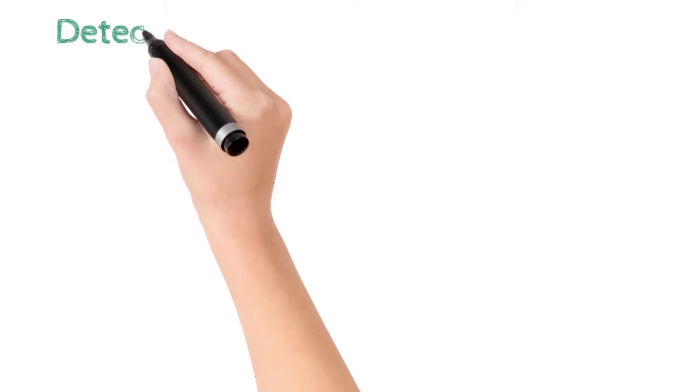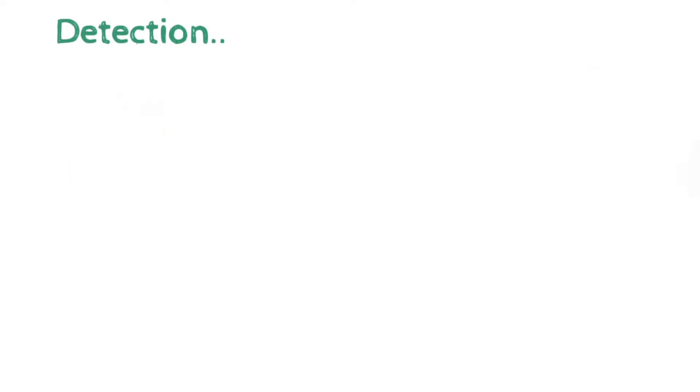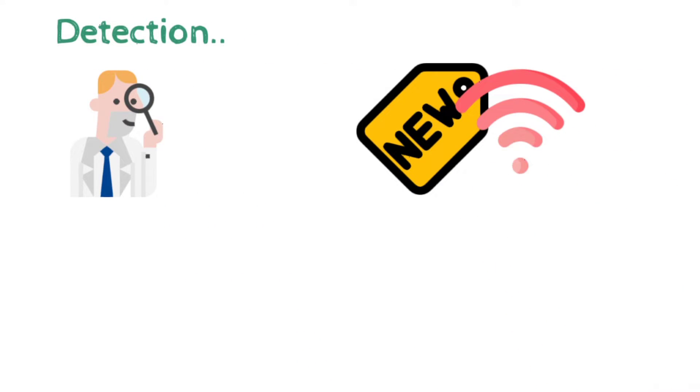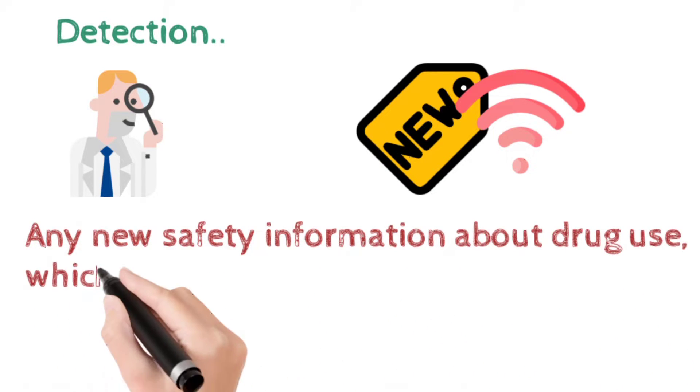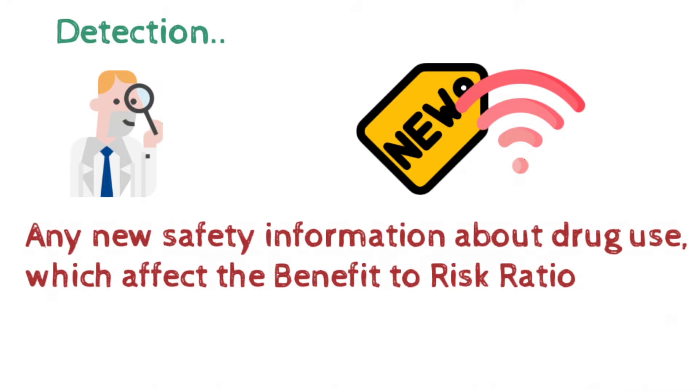So now come back to the first step in pharmacovigilance, which is detection. In this step we detect any new signal of a drug. New signal means any new safety information about drug use which affects the benefit to risk ratio associated with the use of a drug. In simple language we can say, now the benefit of the drug is less than its risk.